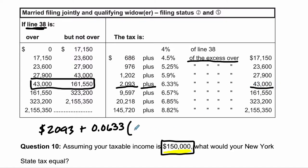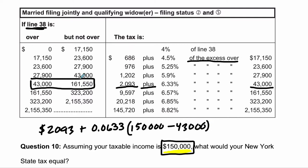So what does that mean — the excess over — so how much taxable income, $150,000, do you have over $43,000? That's basically the top of the last bracket.